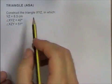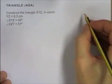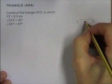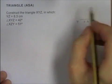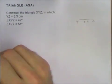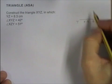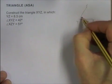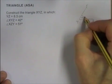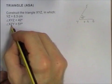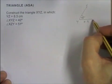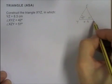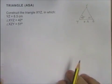If I draw the quick sketch, we have YZ equals 8.3 centimeters. So from Y to Z, we're going to have 8.3. We have angle XYZ is 42, so it's going to be from X to Y to Z. So X is going to be somewhere up here, to Y to Z. That's going to be 42 degrees. And this tells us that X to Z to Y, so that's this angle here, is going to be 51 degrees. Now I've got my rough sketch. I use my rough sketch for my triangle.